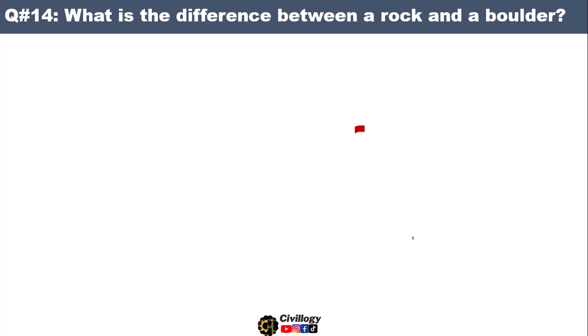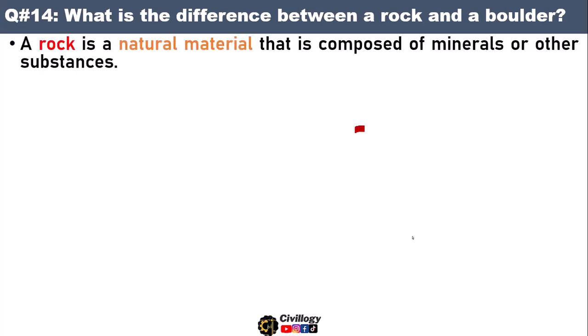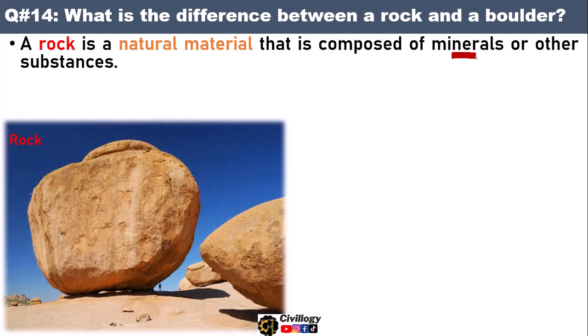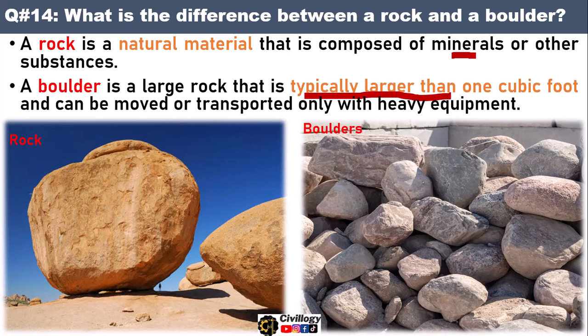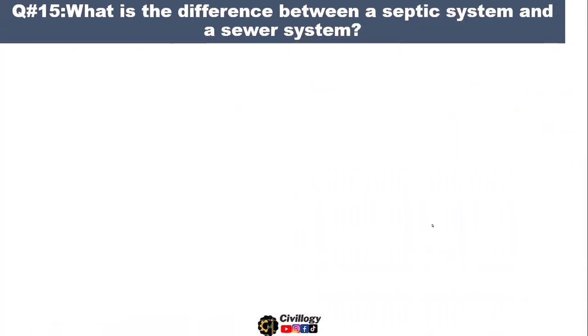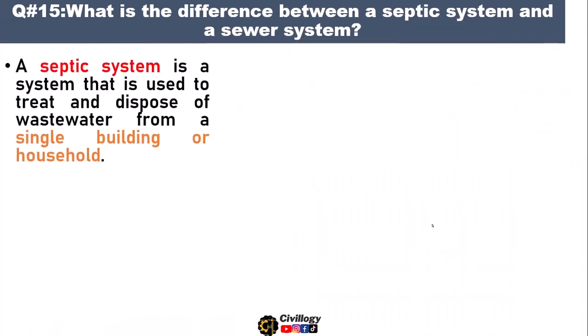Question number fourteen: what is the difference between a rock and a boulder? A rock is a natural material that is composed of minerals or other substances, whereas a boulder is a large rock that is typically larger than one cubic foot and can be moved or transported only with heavy equipment. Boulders are used for construction purposes, while rock is a natural material that can be broken down.